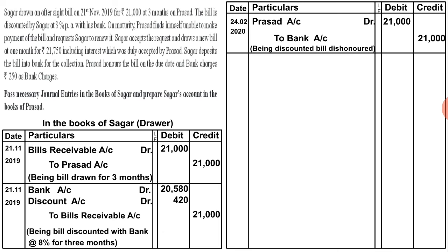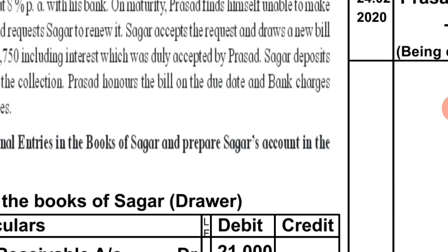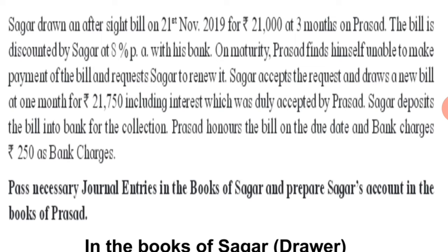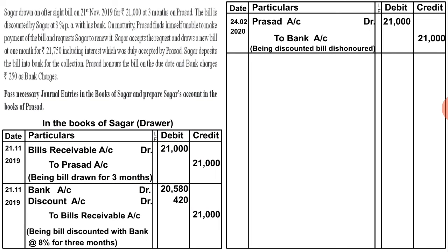Now, Prasad requests Sagar to renew the bill. Sagar accepts the request and draws a new bill at one month for ₹21,750 including interest, which was duly accepted by Prasad. Since Prasad had no money, he asked Sagar for more time. Sagar agreed but said he would draw a new bill for ₹21,750 — meaning ₹750 extra as interest.